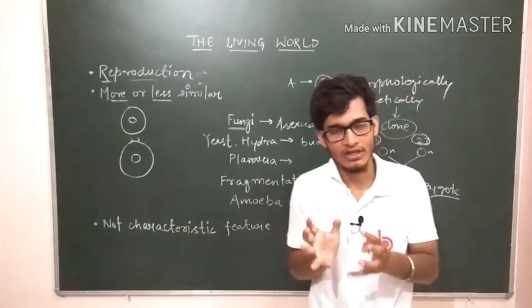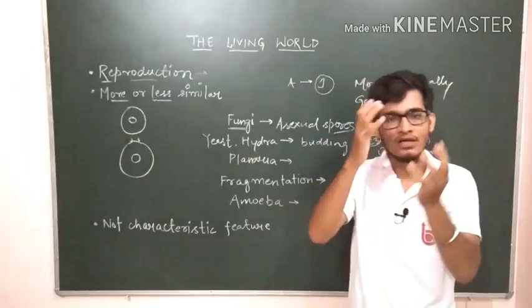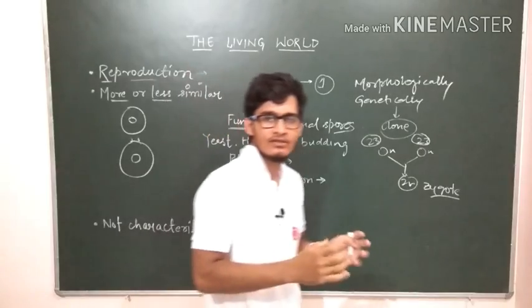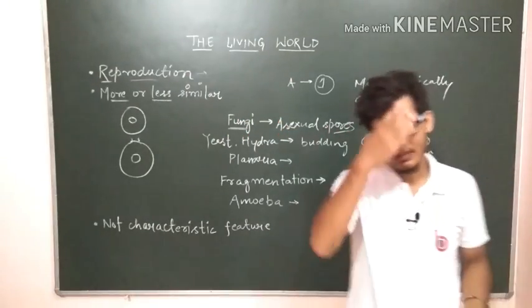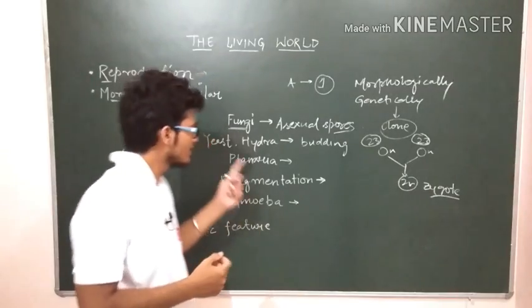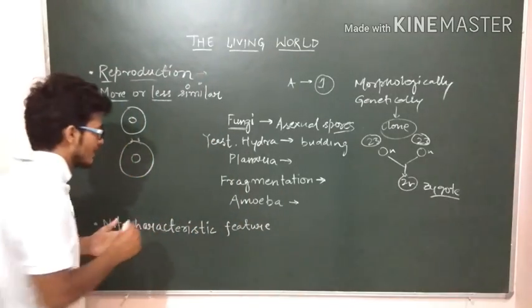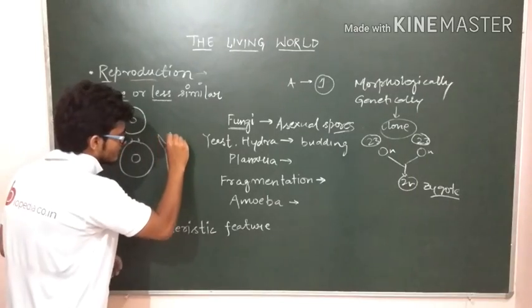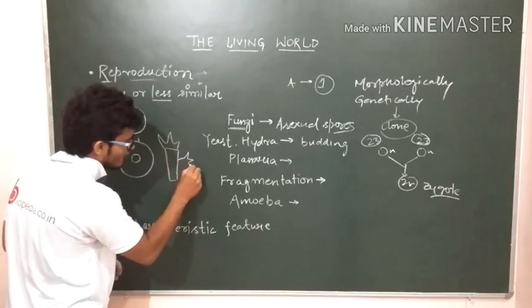And after some time it will become another yeast. So there is a small projection which is coming outside from the main organism's body and it will become large. After becoming ample large, it will get detached and can live individually.